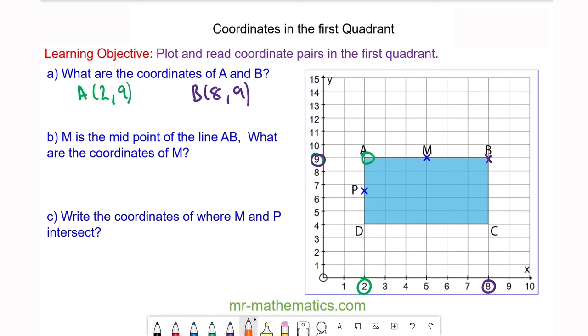For question b, M is the midpoint of line AB, which is here. The coordinate of M is when x equals 5 and again y equals 9.